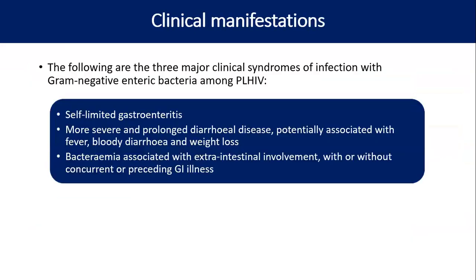Clinical manifestations of gram-negative enteric bacteria range from self-limited gastroenteritis to more severe prolonged diarrheal disease potentially associated with fever, bloody diarrhea, weight loss, even bacteremia or sepsis with extra-intestinal involvement, with or without concurrent GI illness — a full spectrum from self-limited to bacteremia.